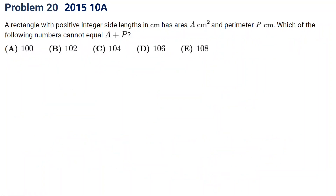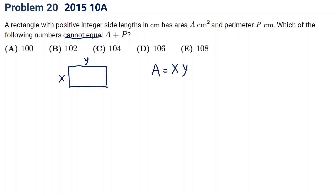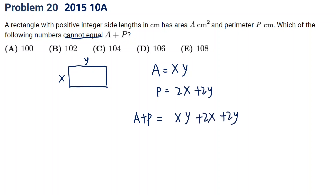The next one is from 2015 10A problem 20. This uses a similar idea to the previous problem. A rectangle with positive integer side lengths has area A and perimeter P. Which of the following numbers cannot equal A plus P? Let's say the rectangle is x by y. Area A equals xy, perimeter is 2x plus 2y, so A plus P equals xy plus 2x plus 2y.